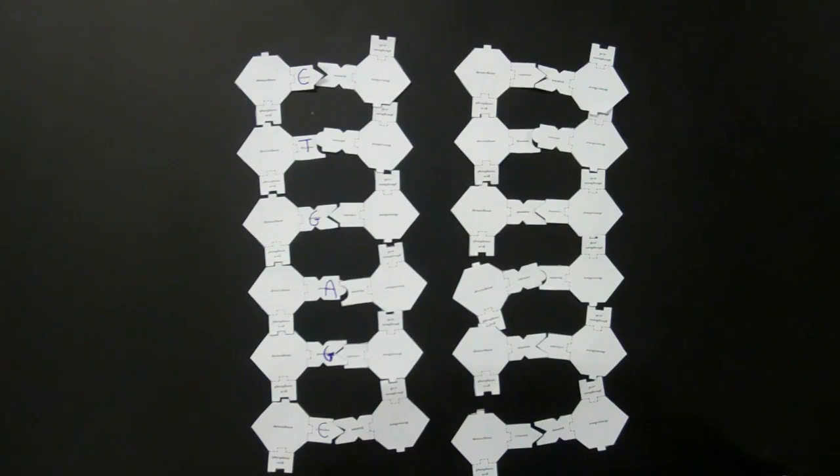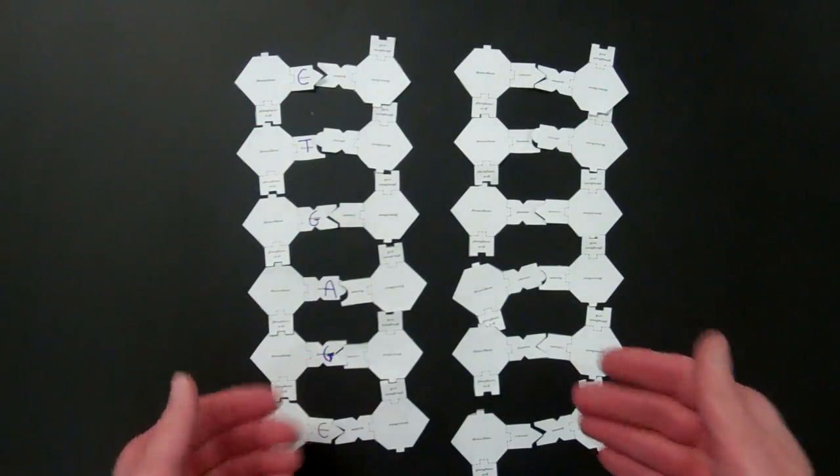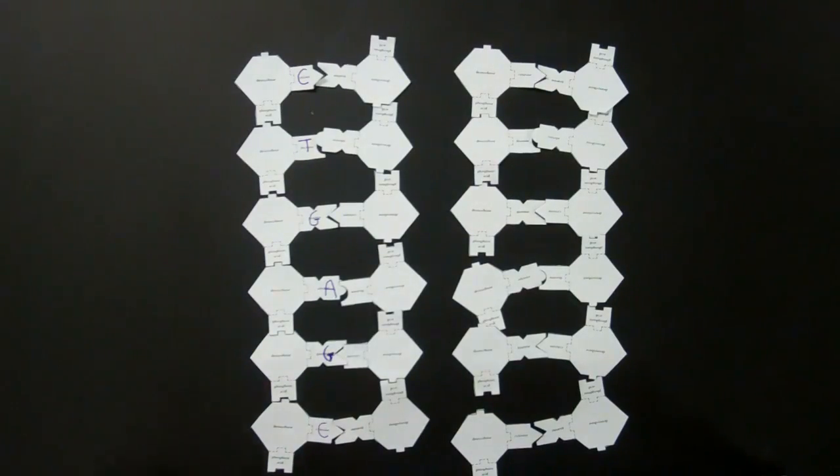Now, if we were talking about this in terms of chromosomes, the first ladder that we started with you could think of as a single strand of a chromosome. Now that we have replicated the DNA, we can consider this to be a double-stranded chromosome.